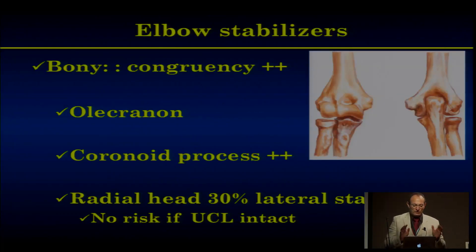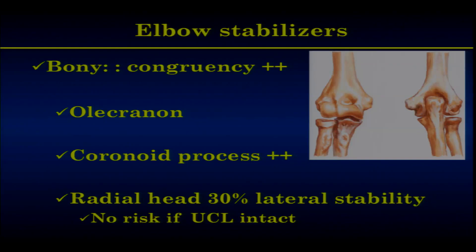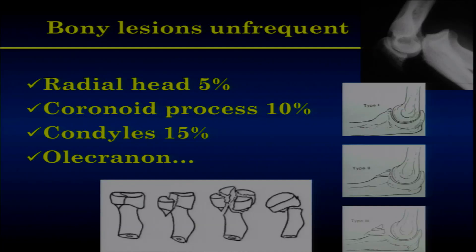Regarding elbow stabilizers: you have the bony congruency, and the most important structure in the olecranon is the coronoid process. The radial head is not so important when the MCL — the medial collateral ligament — is intact; it is only in charge of 30% of lateral stability. Bony lesions combined with dislocation are not so frequent: 5% of radial heads are fractured, 10% of the coronoid process, and 15% of the condyles.